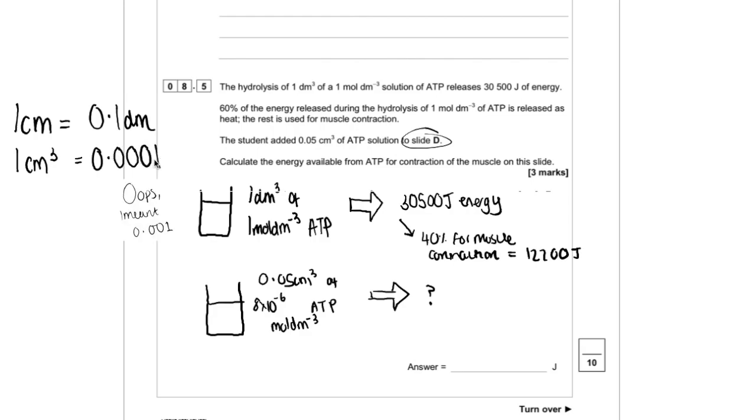So from here to here, we've already divided by 10. And we imagine this is to the power of 1. But if we're going up 2 to the power of 3, we basically have to add another two zeros onto that to account for that. So to convert 0.05 centimetres cubed into decimetres cubed, we have to divide that by a thousand. And that gives us 5 times 10 to the power of minus 5.